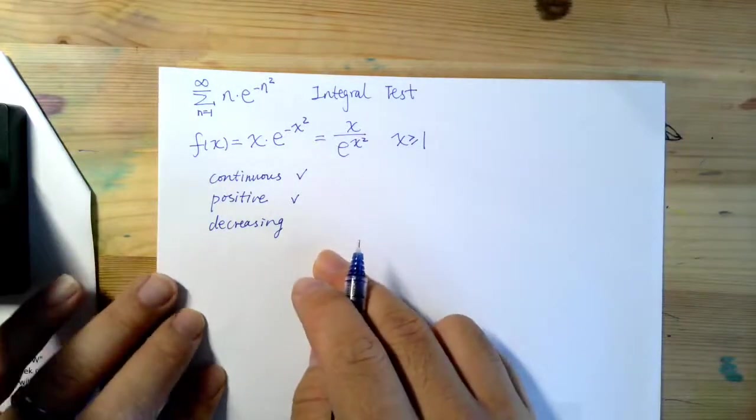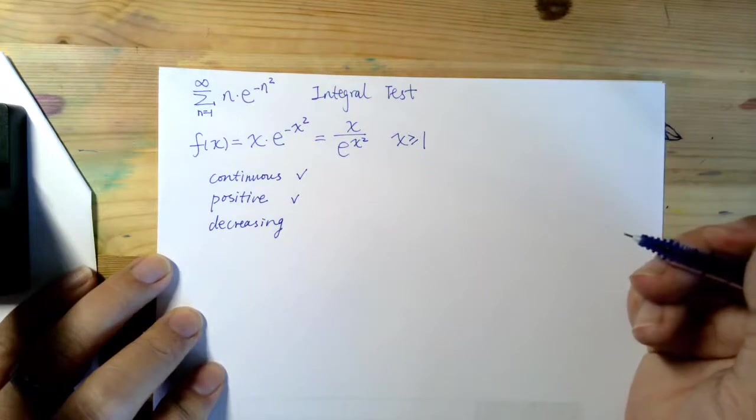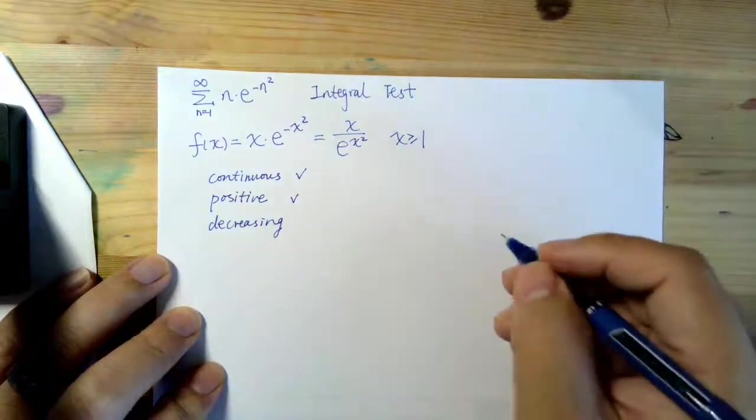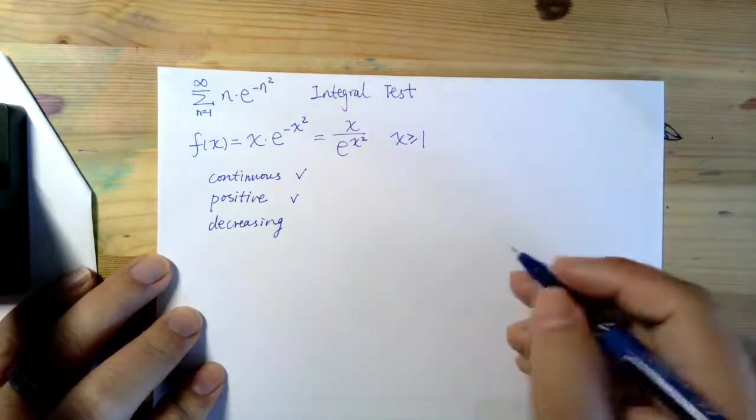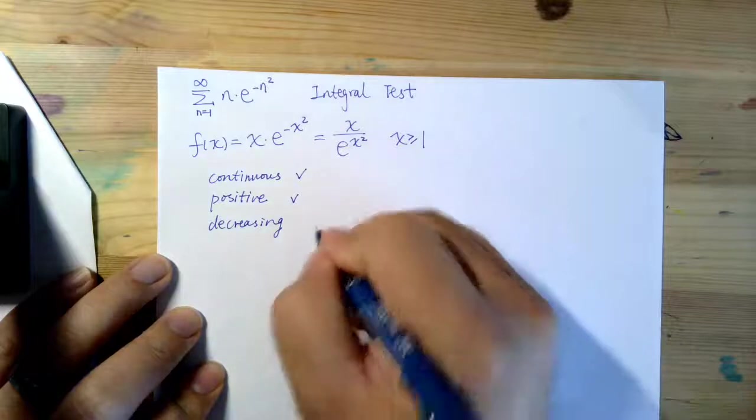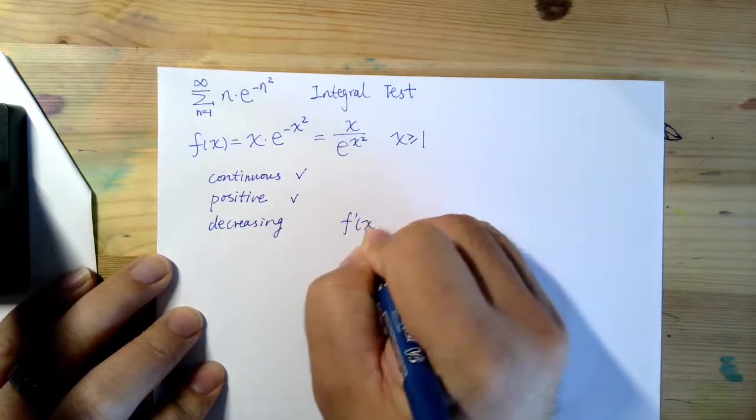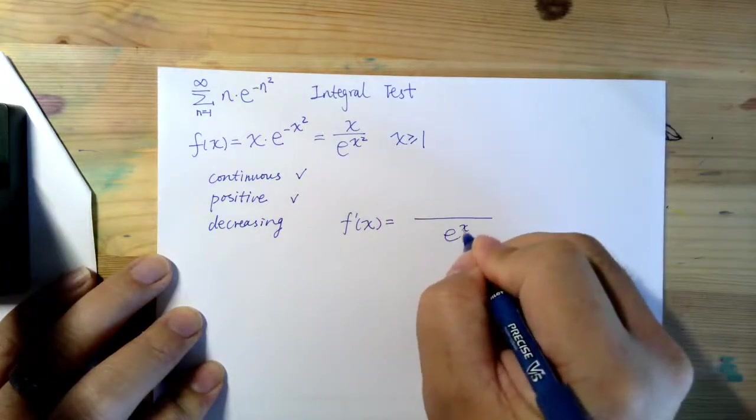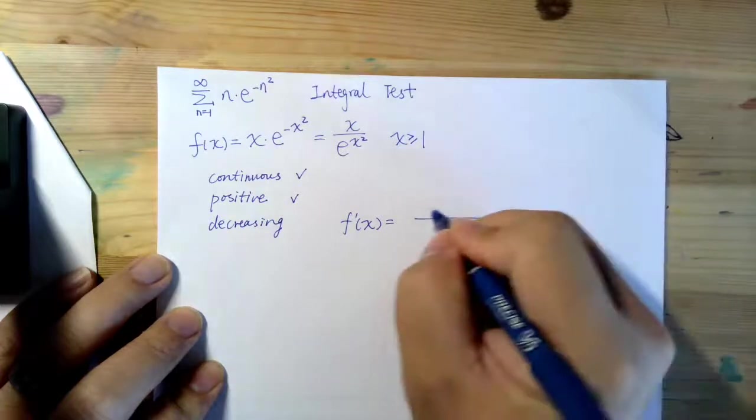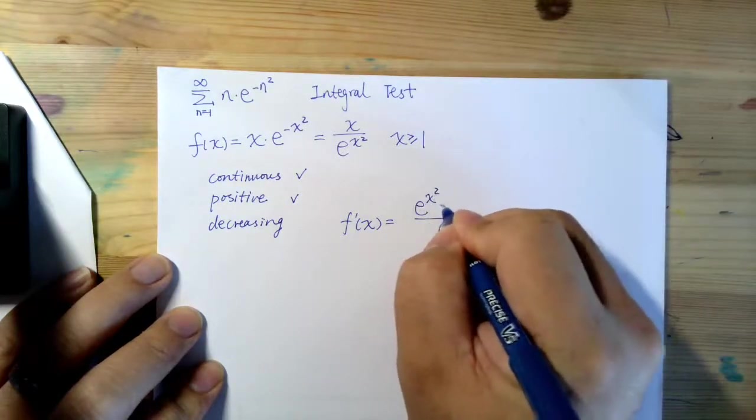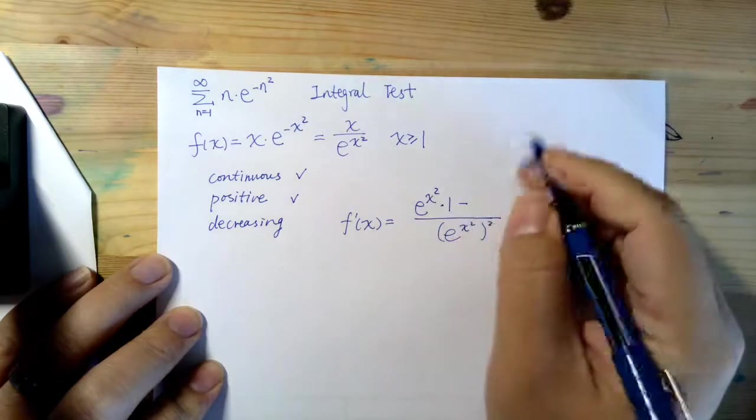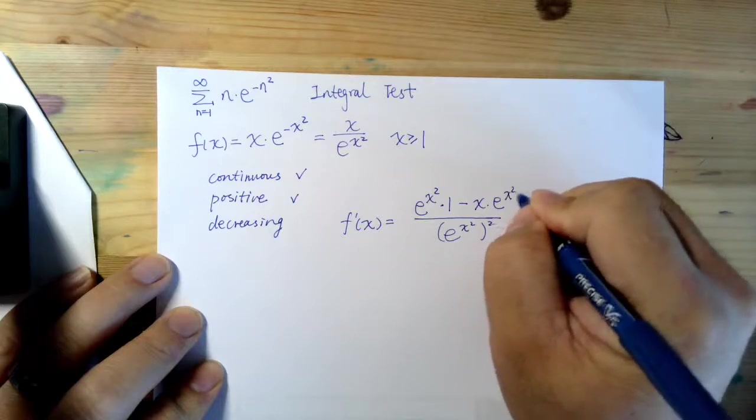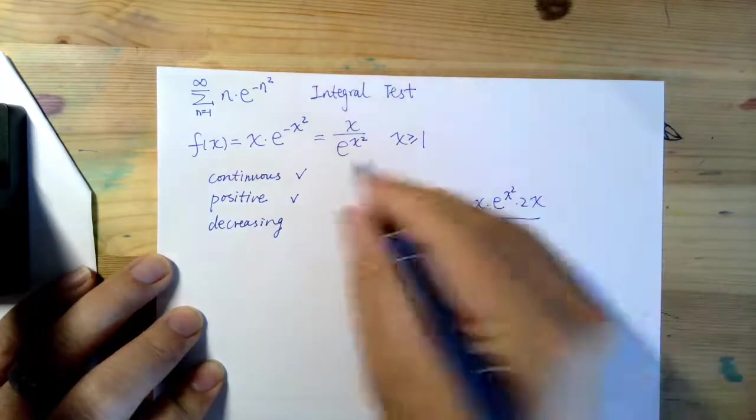About decreasing, this part, it's not that obvious. Because as x becomes larger, on the top, it's also becoming larger. How do we know whether it's increasing or decreasing? This is what we can do. We can take the derivative of this function. If I apply the quotient rule, it's going to be e to the power of x squared times the derivative of the top minus x times the derivative of the bottom, which is e to the power of x squared times 2x, based on the chain rule.